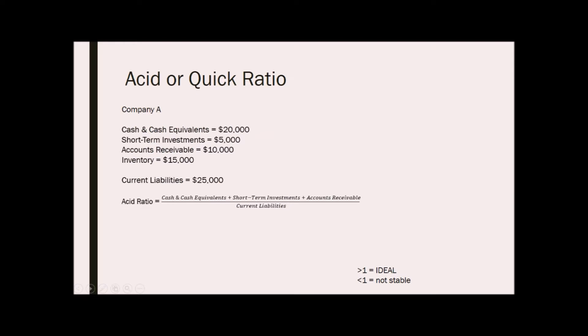For an example, company A has cash and cash equivalents of $20,000, short-term investments of $5,000, accounts receivable of $10,000, inventory of $15,000, and current liabilities of $25,000. To compute for its acid ratio, we use the first formula. So we add $20,000 plus $5,000 plus $10,000 all over $25,000. Then our acid ratio is $35,000 over $25,000.